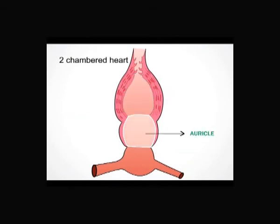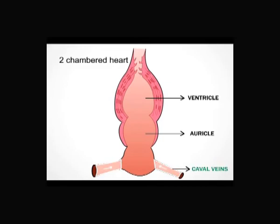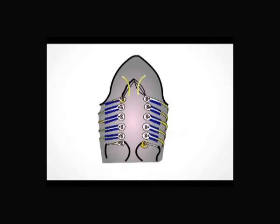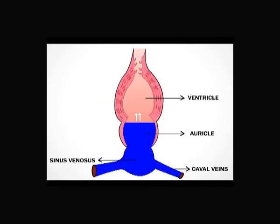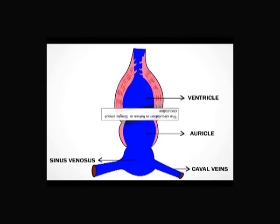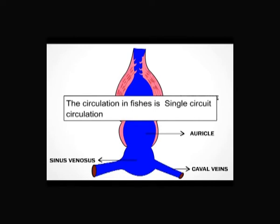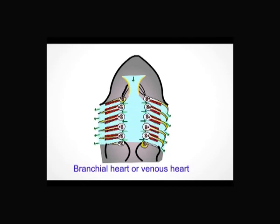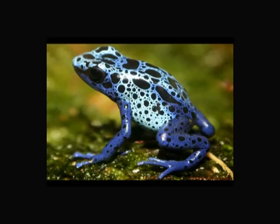In fishes, the heart is two-chambered — one auricle and one ventricle. The heart collects deoxygenated blood from different organs through two caval veins, which open into a chamber called the sinus venosus. From the sinus venosus, impure blood enters the auricle, then the ventricle, and is sent to the gills for oxygenation. The oxygenated blood is then supplied to different organs. Since blood passes through the heart only once per complete circulation, this is called single circuit circulation. The heart is also called a branchial heart or venous heart.